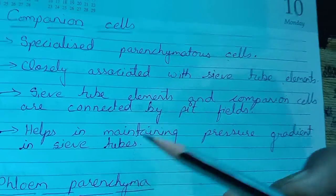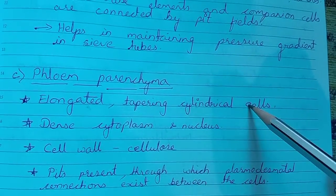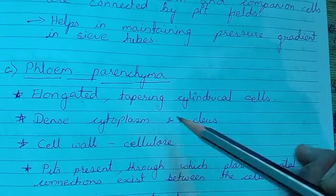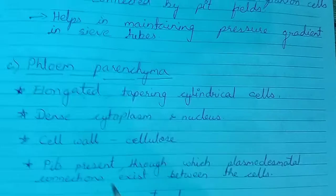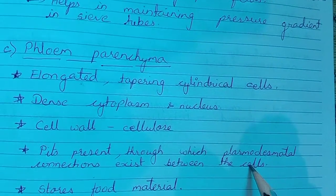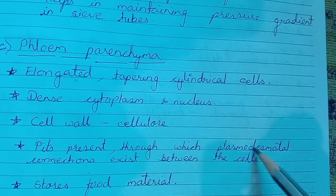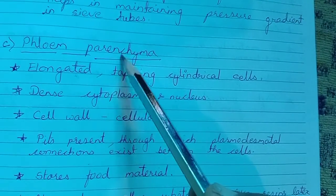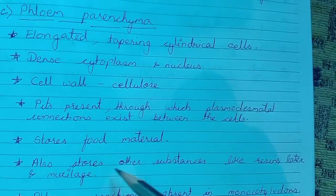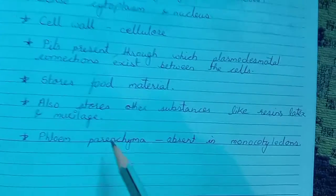Phloem parenchyma consists of elongated, tapering cylindrical cells — pointed on two sides. It has dense cytoplasm with a nucleus. The cell wall consists of cellulose, and pits are present through which plasmodesmata connections exist between the cells. Phloem parenchyma cells are connected to each other via plasmodesmata, and their main function is storage of food materials, resins, latex, and mucilage.